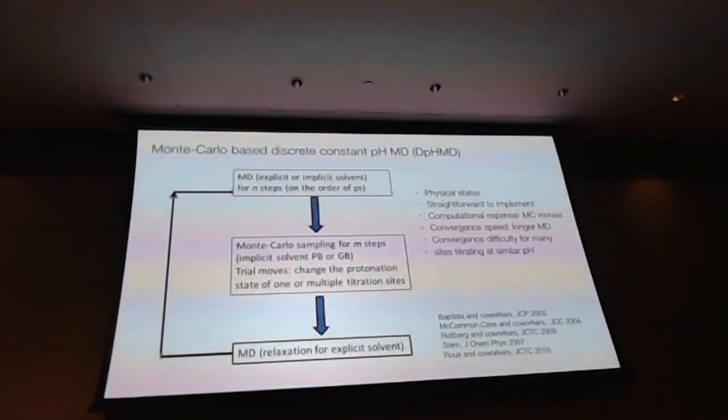Now, currently, there are two types of approaches to incorporate pH effect in our MD simulation. The one type is based on the Monte Carlo scheme, which incorporates both molecular dynamics and the Monte Carlo sampling of protonation state. And if we do this long enough in cycles, then we eventually converge both conformational state and protonation state. The advantage is that we have physical states here. We have proton on or off, zero or one binary problem. So that's why we give this name a discrete constant pH method.